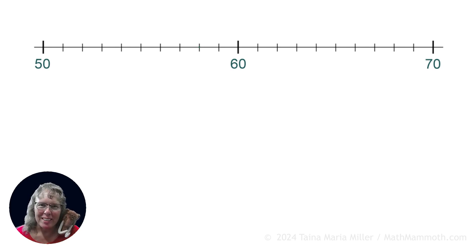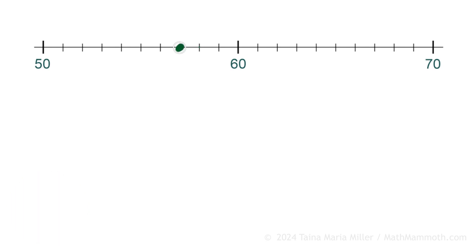So here we have a number line and let's look at, for example, a number that's here. Which number is it? That's going to be 3 units from 60, so it's 57.